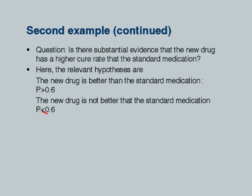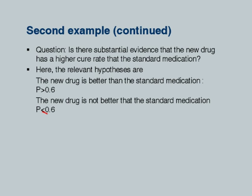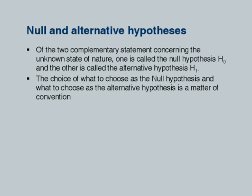Society is generally conservative and we require strong evidence to overthrow the status quo. To overthrow something established you need strong evidence because there is a cost to switching. You want enough evidence that something is really better, otherwise it is not worth it. The relevant hypothesis is that the new drug is better — the success rate P of the new drug is greater than 0.6 — and the reverse is that it is not better, P is less than or equal to 0.6.